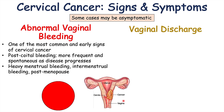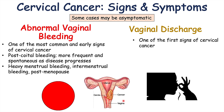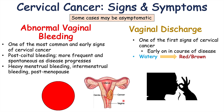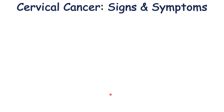Another important finding in cervical cancer is vaginal discharge, which is also often found early in the disease course. The vaginal discharge typically starts out as watery and then later becomes more red to brown in coloration. It can also become malodorous, meaning it develops an unpleasant smell. This is due to the inflammatory process going on within the cervix from the growing cancer.